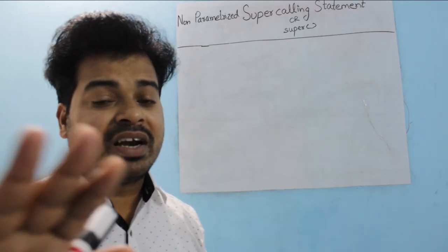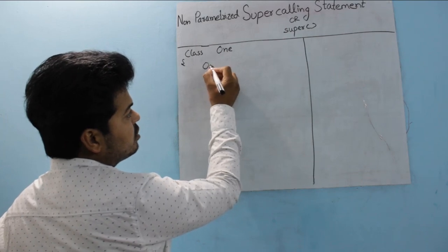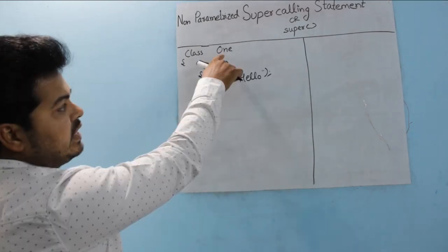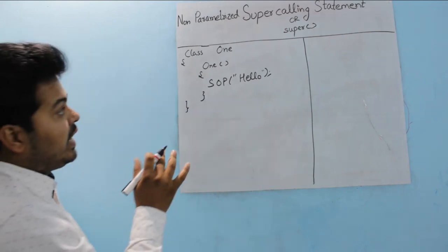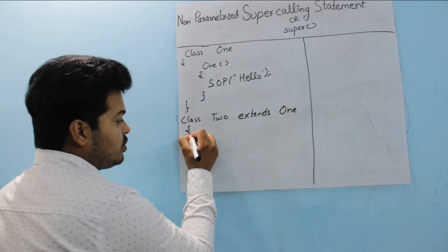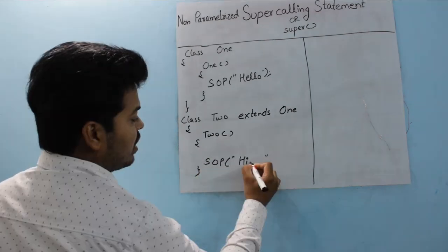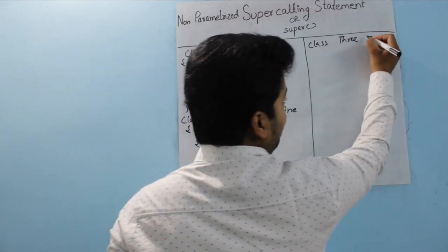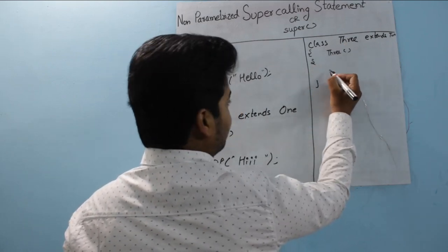When I write the whole program you will understand it perfectly. Let's say you have a class called Class1 which has a constructor also called 'one'. It prints System.out.println hello — very simple. Now you have another class which is Class2 which inherits Class1, so I write 'extends 1'. This class has a constructor named 'two' which prints System.out.println hi.